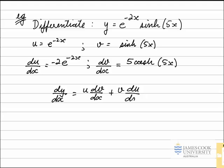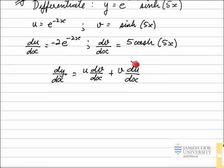And substituting in the appropriate functions that we have here. So u times dv dx, u is e to the negative 2x times 5 cosh of 5x. I put all the coefficients out the front first, so this will give us 5 times e to the negative 2x times cosh of 5x.